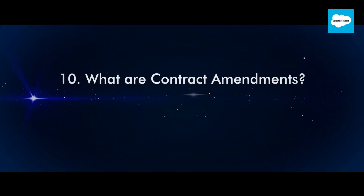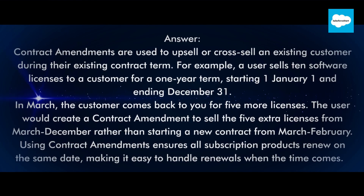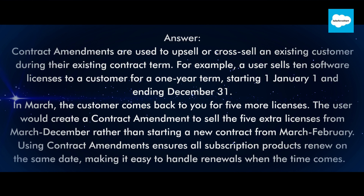Question 10: What are contract amendments? Contract amendments are used to upsell or cross-sell an existing customer during their existing contract term. For example, a user sells 10 software licenses to a customer for a one-year term starting January 1 and ending December 31. In March, the customer comes back for five more licenses. The user would create a contract amendment to sell the five extra licenses from March to December, rather than starting a new contract from March to February. Using contract amendments ensures all subscription products renew on the same date, making it easy to handle renewals when the time comes.